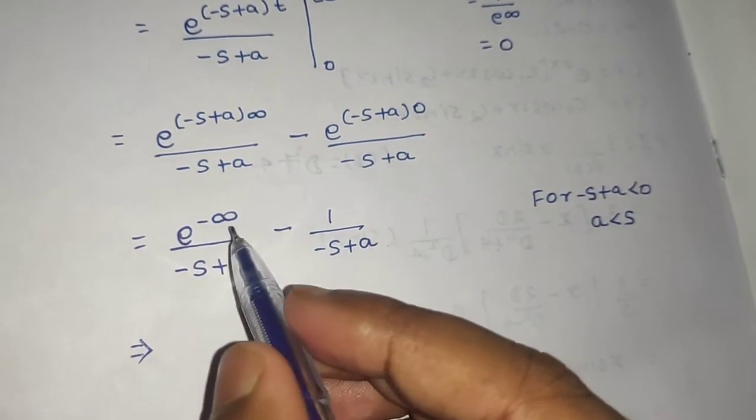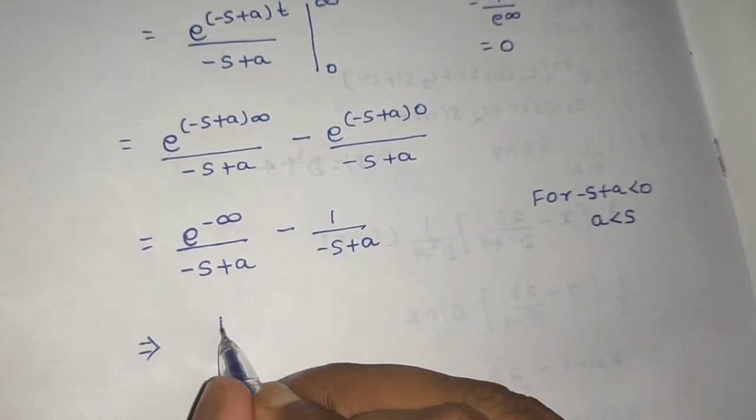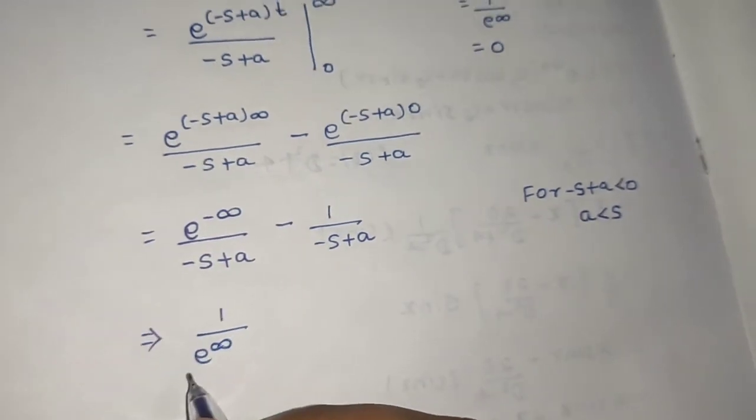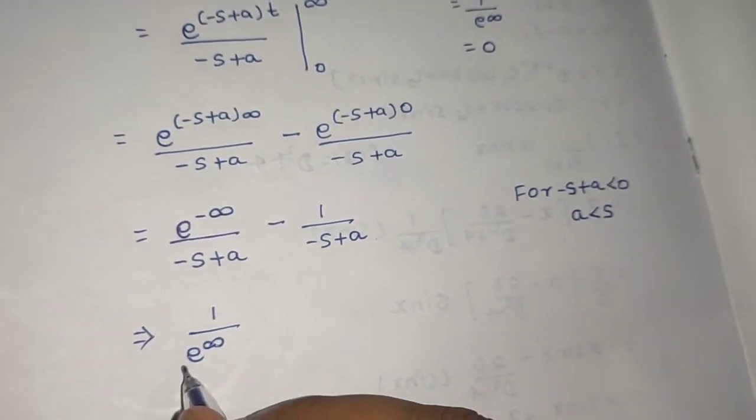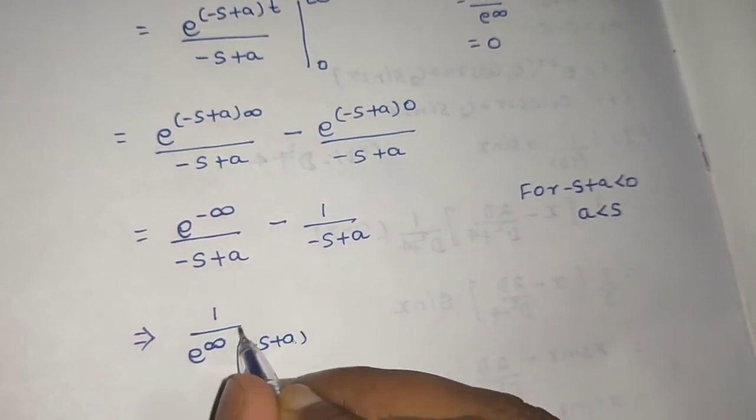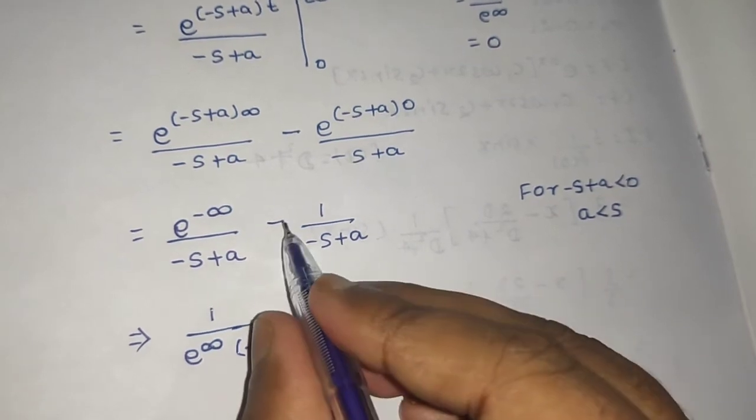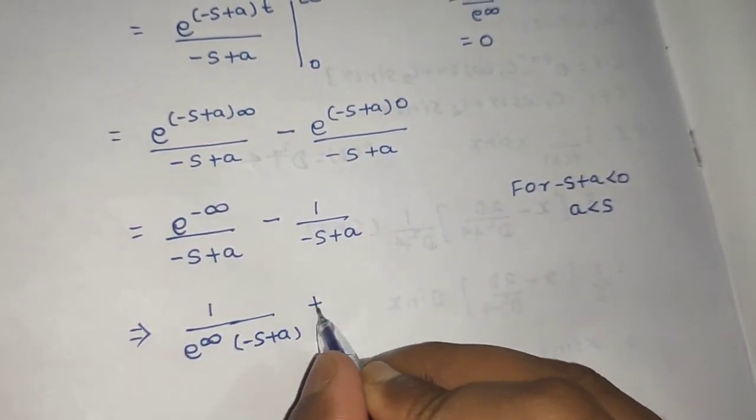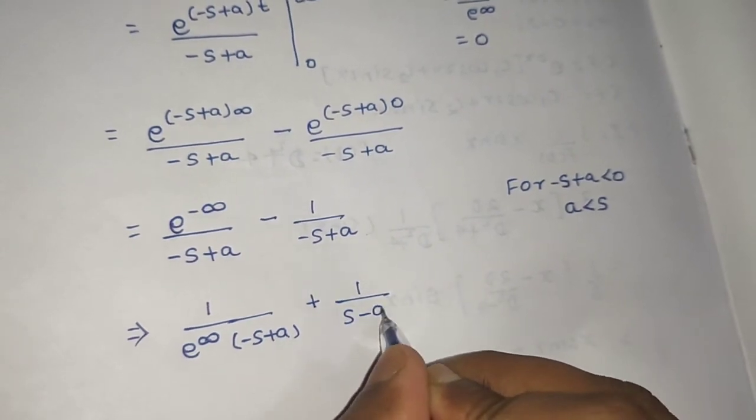So, this will become 1 upon e power infinity. So, this will be minus s plus a only and you can take this minus side inside. So, plus 1 upon s minus a.